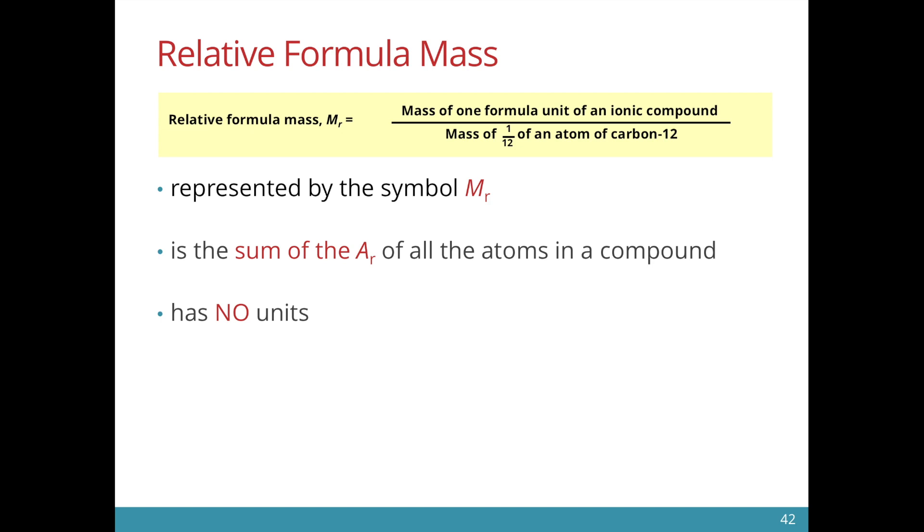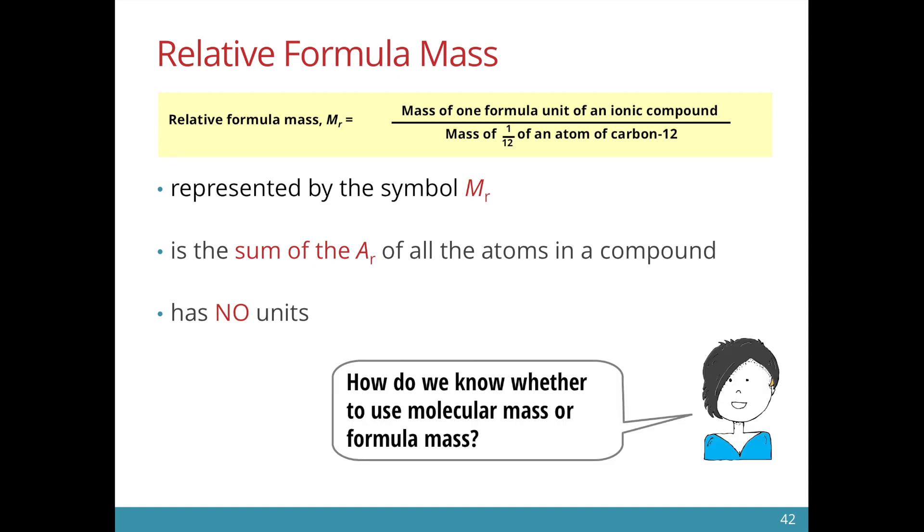The relative formula mass has the symbol MR again same thing and we add up all the AR of the atoms in the compound. So whether it is molecular mass or formula mass we use the symbol MR just that one refers to covalent compounds while the other refers to ionic compounds.